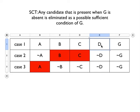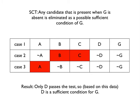D is present in case one, but G isn't absent in case one. So again, D passes the test, and so we can say that D is a sufficient condition for G.